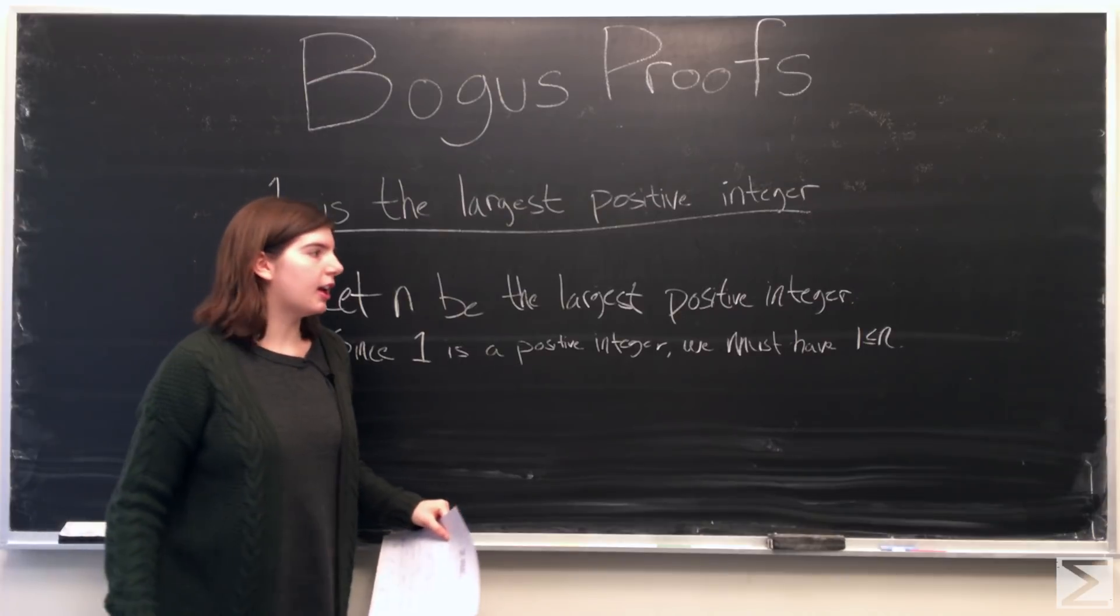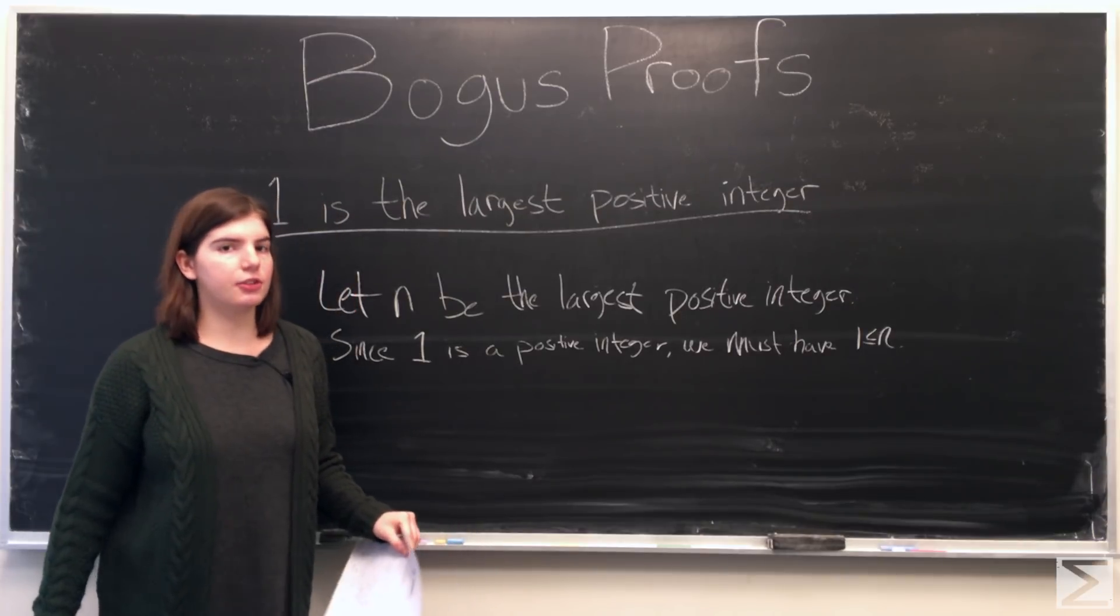I'll multiply both sides by n and we'll have n is less than or equal to n squared.